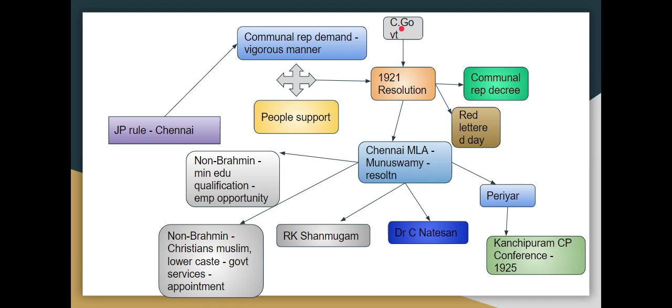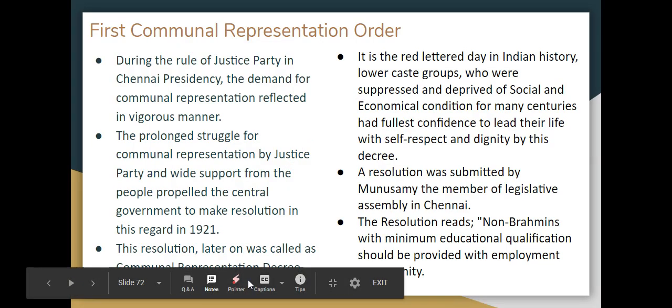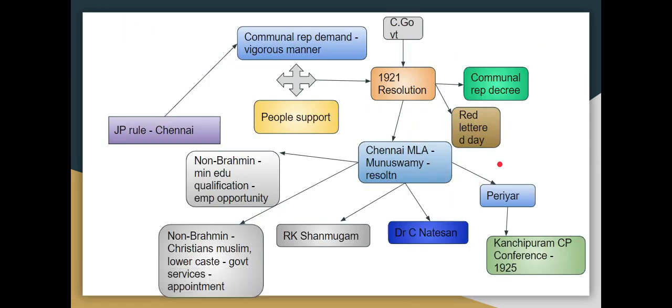During Justice Party rule, the communal representation demand was pursued vigorously and supported by the people. In 1921, a resolution was passed on communal representation, and that resolution is considered a red letter day in Indian history — because it addressed the subjugation of backward and downtrodden communities and gave them confidence to lead their lives.